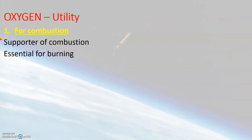Let us see what combustion or burning is. During the process of combustion, a chemical reaction takes place between substances, generally in the presence of oxygen in the atmosphere. This process produces gaseous products along with the generation of heat and light energy. Since burning takes place in the presence of oxygen, the process involves oxidation of substances, and products of oxidation are formed along with the liberation of heat and light energy.